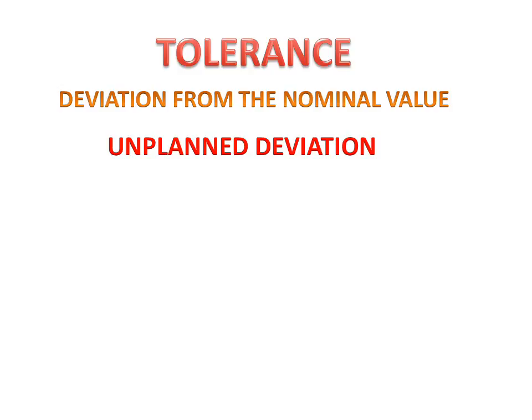If we make a product from a theoretical drawing, there will be a difference between the actual value and the theoretical value. This deviation is called tolerance. It is an unplanned deviation — we are not planning for this, so it is called an unplanned deviation.